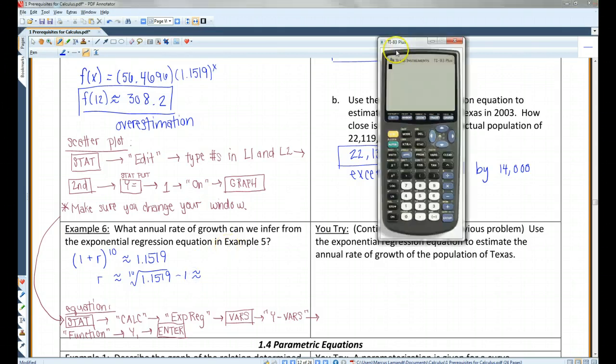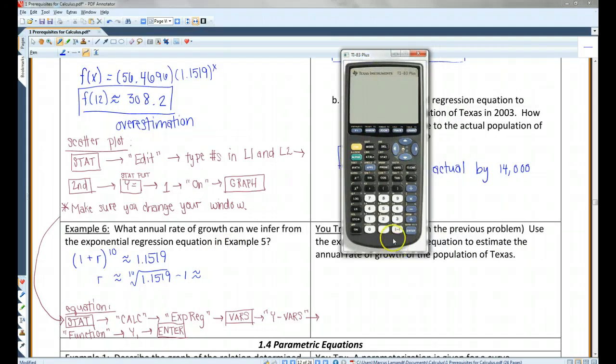Let's pull out the calculator. All right, so here's our calculator. The way you do a 10th root is like this. You're going to hit 10. Then you're going to go to math. This one here with the x and then the square root, that's the one you want, 5. All right, so 10 root, 1.1519 minus 1. So the rate of growth is 0.014. I'll just make it 0.014.